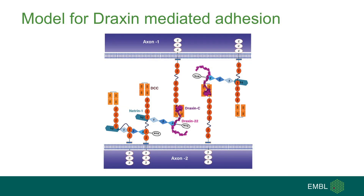The most prominent phenotype for Draxin knockout mice is defasciculation, which is the unravelling of axonal bundles. This is an adhesive process, which has led us to propose a model where two axons decorated with DCC adhere to each other when both Netrin and Draxin are present. Draxin thus acts like an adhesive glue by binding both Netrin and DCC.